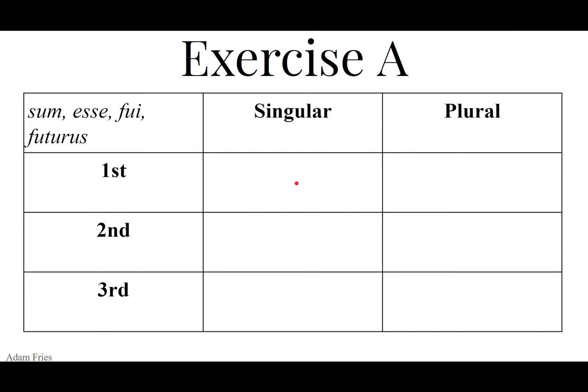The pluperfect is: fueram, fueras, fuerat, fueramus, fueratis, fuerant. And the future perfect is: fuero, fueris, fuerit. Optime! Very well done! That wraps it up for Exercise A. You are now ready to move on to Exercise B. Vale omnes!